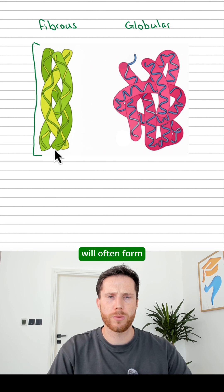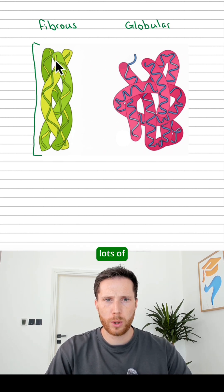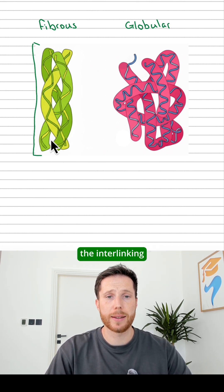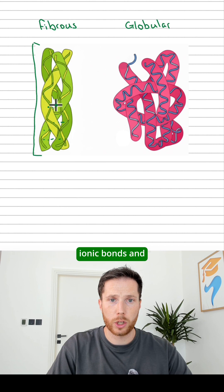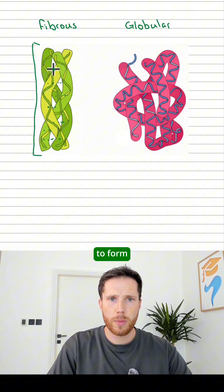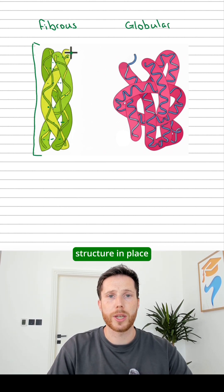Fibrous proteins will often form these fibers. And these form when we get lots of polypeptide chains lying parallel together. And then the interlinking forces between the amino acids, which includes things like hydrogen bonds, ionic bonds, and disulfide bridges, will start to form and they'll hold this tertiary structure in place.